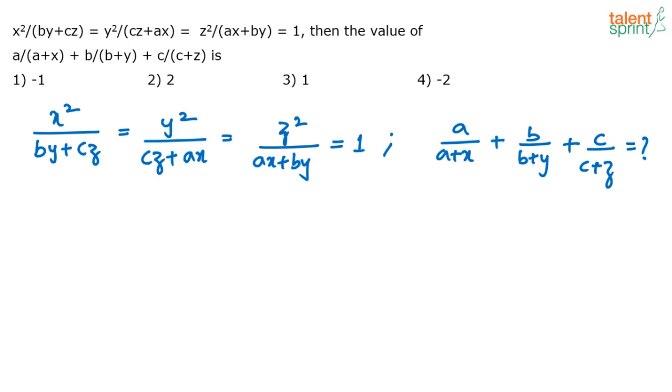x, y, z, a, b, c. These are the six variables. So if you have to follow the regular process. Six equations, six variables. Solve for it and then substitute the values here. Or maybe try and simplify it in some form here to get a by a plus x, b by b plus y and so on. But then no. We are lazy fellows. Let's go for substitution.